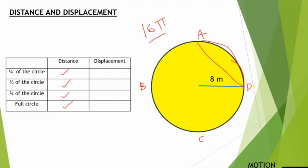For displacement, we need to find the straight-line distance from start to end. For one-fourth of the circle, we find the hypotenuse with both sides equal to the radius, 8 meters each. For half of the circle, the initial position is D and the final position is B. Connecting them, both radii are 8 meters, so the total displacement is 16 meters.